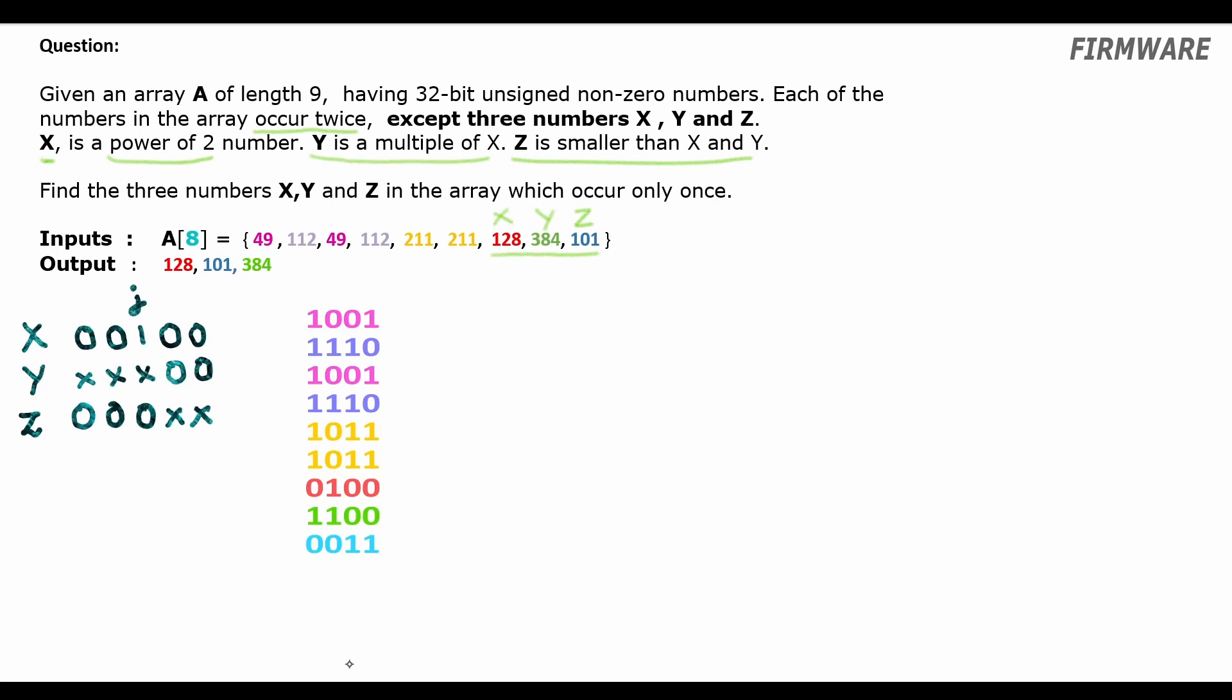Great. Now, let's revise some concepts of XOR. Given a number A, A XOR A will result in zero. And for numbers A, B, C, D, if we do A XOR B XOR A XOR C XOR D, we will have A XOR A as zero. And zero XOR B XOR C XOR D will result in B XOR C XOR D.